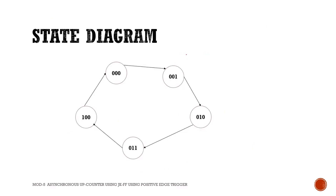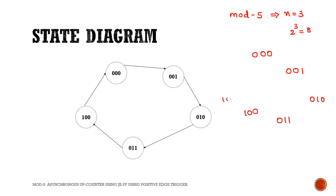The number of flip-flops is 3. The state diagram shows the number of states. With 3 flip-flops, 2^3 = 8 different states are possible: 000, 001, 010, 011, 100, 101, 110, 111. In a normal counter with n=3, transitions go from 0→1→2→3→4→5→6→7 and back to 0.